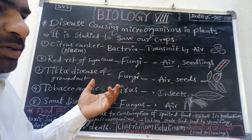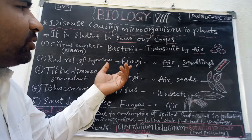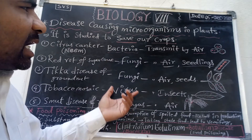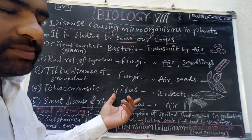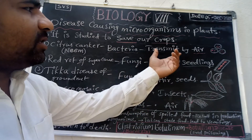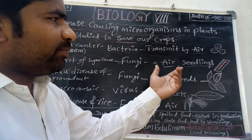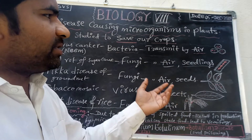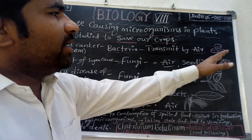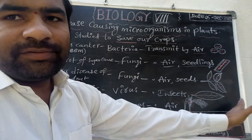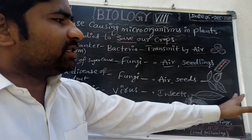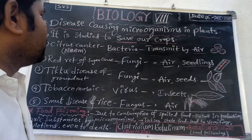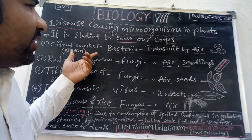You have to read the table, which includes the causative microorganisms and the mode of transmission — how they are transmitting the disease. There is also a figure showing the symptoms of each disease. Here, citrus canker is caused by bacteria.